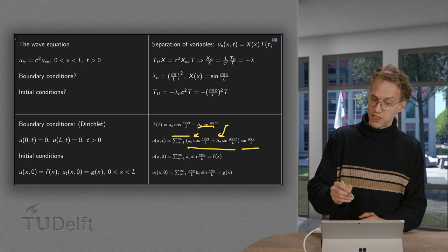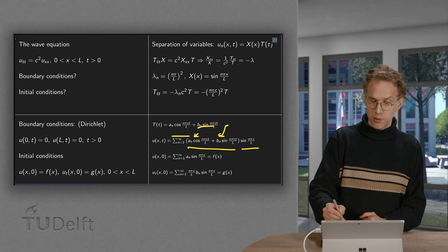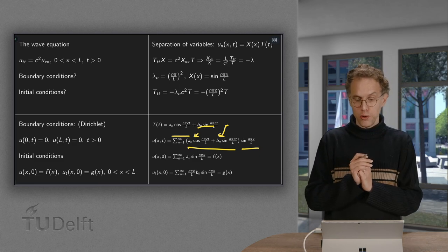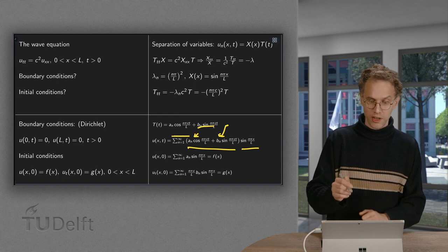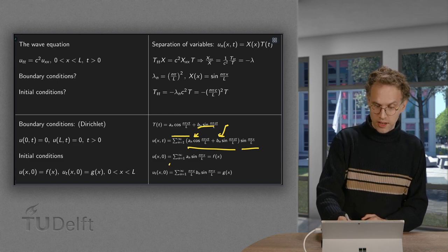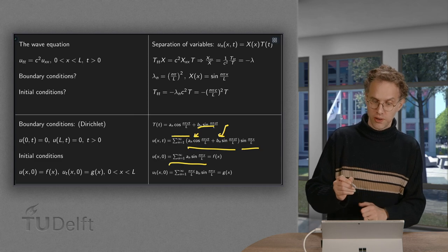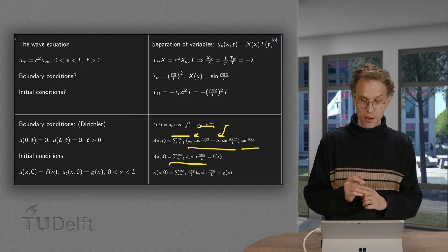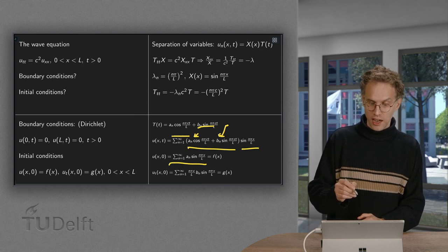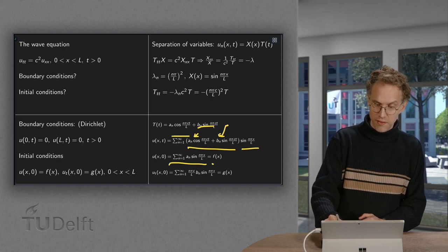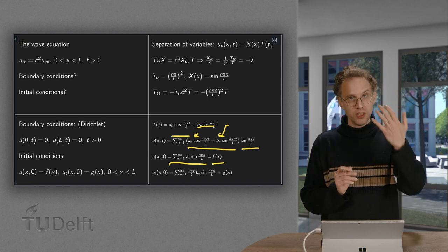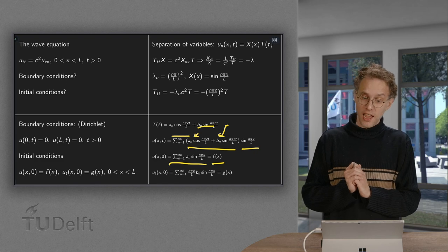If you plug in t equals 0, you lose the sines and the cosine becomes 1. So for t equals 0, because the u of x comma 0 is some a_n times sine n pi x over L equals the f(x), which is given. So this allows us to determine the a_n.